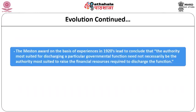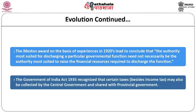The Maston Award, based on experience in the 1920s, led to the conclusion that the authority most suited for discharging a particular governmental function need not necessarily be the authority most suited to raise the financial resources required. The Government of India Act 1935 recognized that certain taxes, in addition to income tax, may also be collected by the central government and shared with the provincial government.